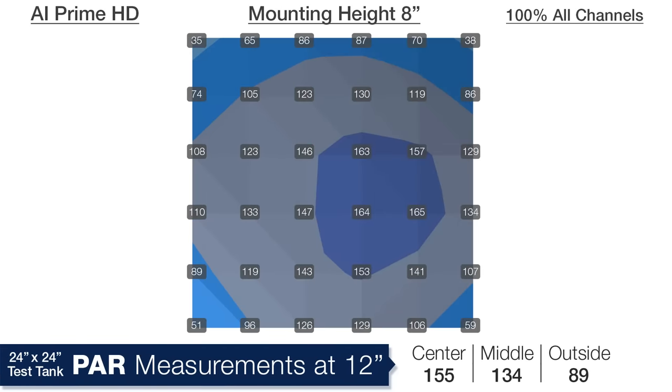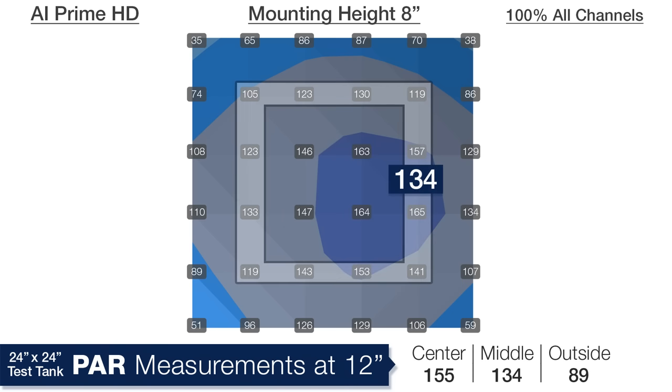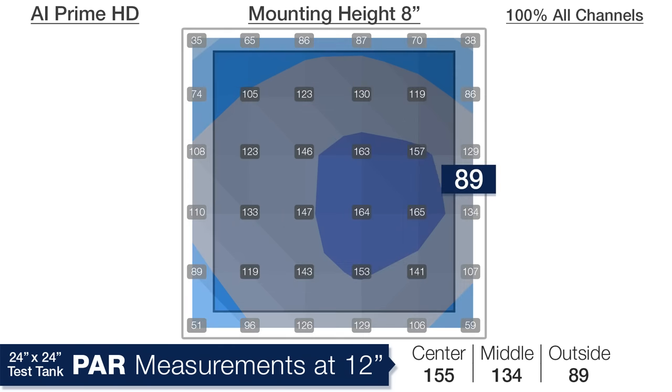Moving down to a depth of 12 inches, the lens is now dispersing the light pretty well with an average of 155 in the center, 134 at four inches outside that, and 89 in the outer ring.